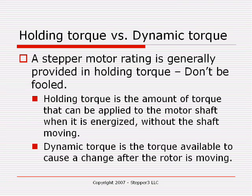Holding torque applies when the motor is at rest. For instance, if you have a 260 ounce-inch motor, when that motor is at rest at its rated nameplate current, you can put 260 ounce-inches of torque on the motor shaft and the motor should not slip. That rating is very different from dynamic torque.